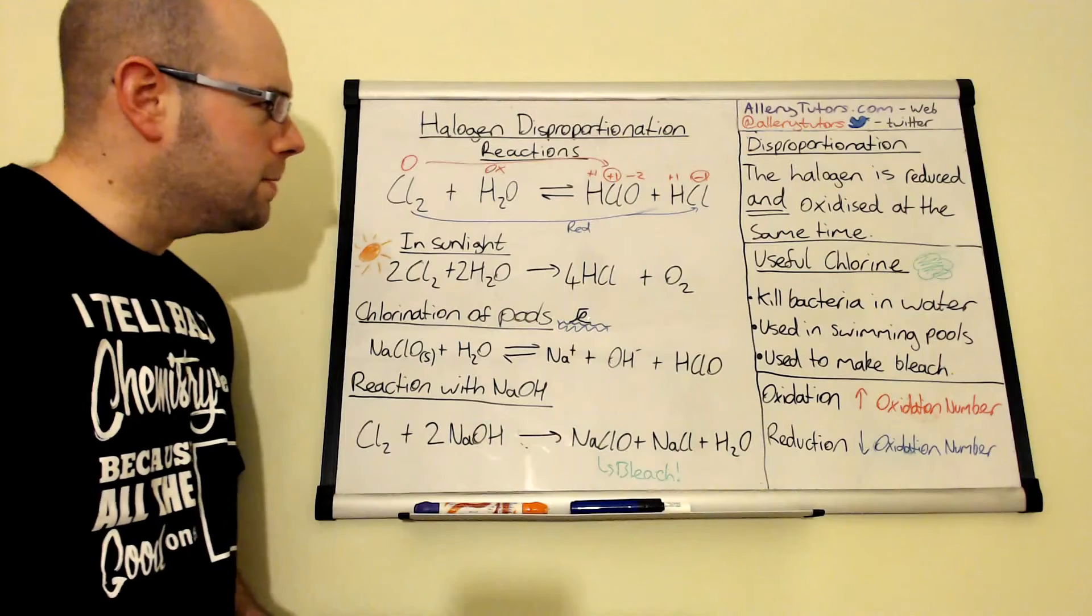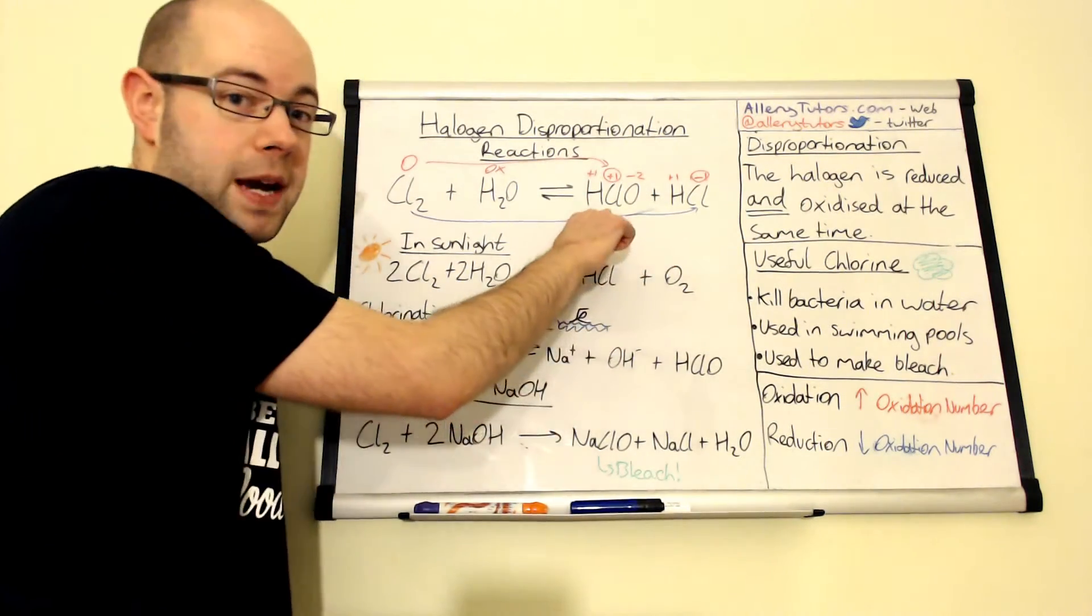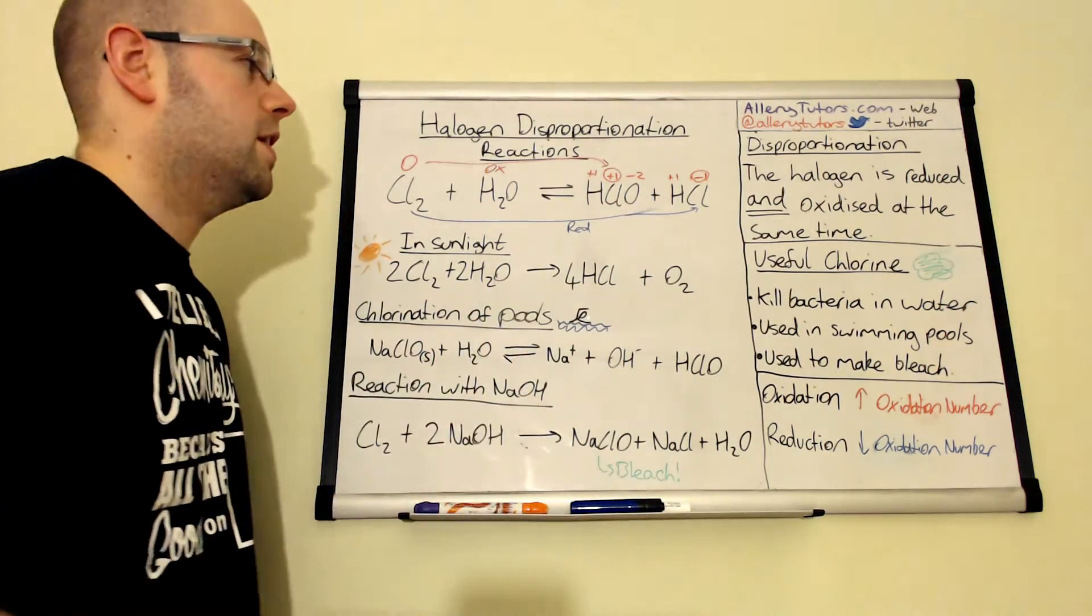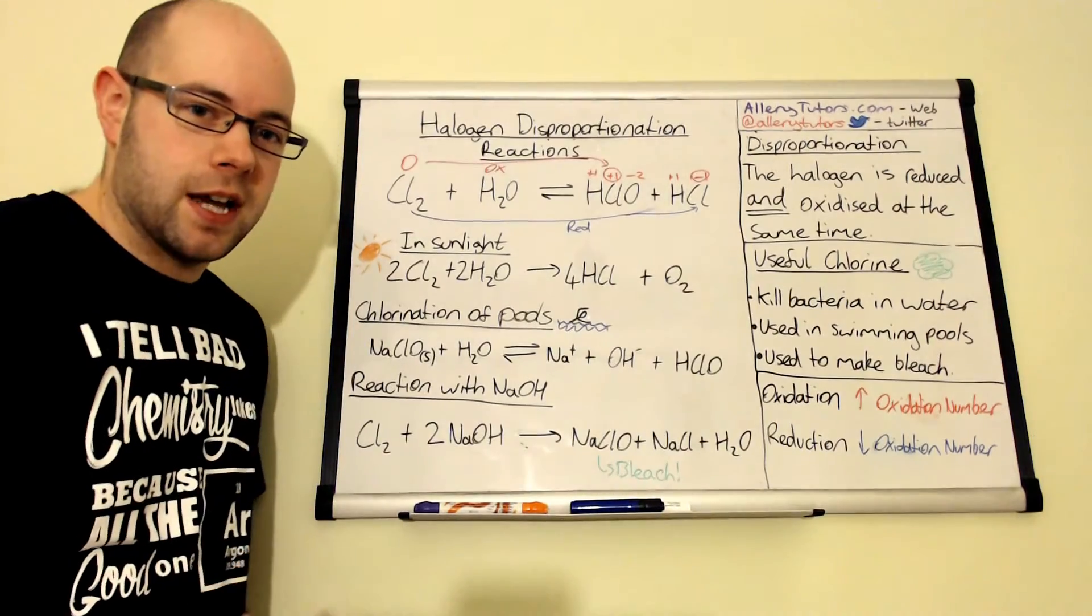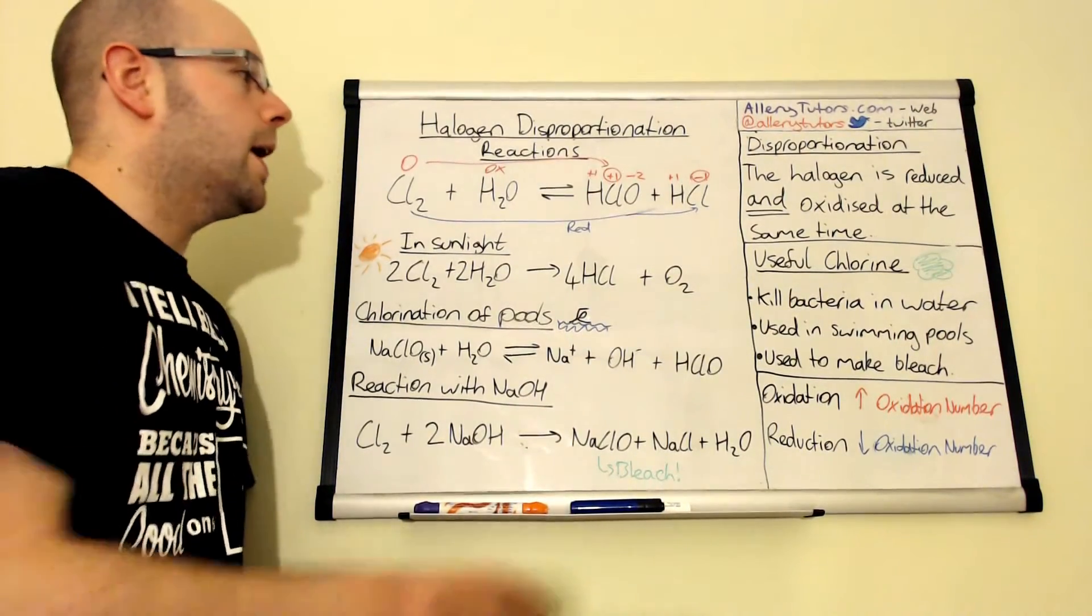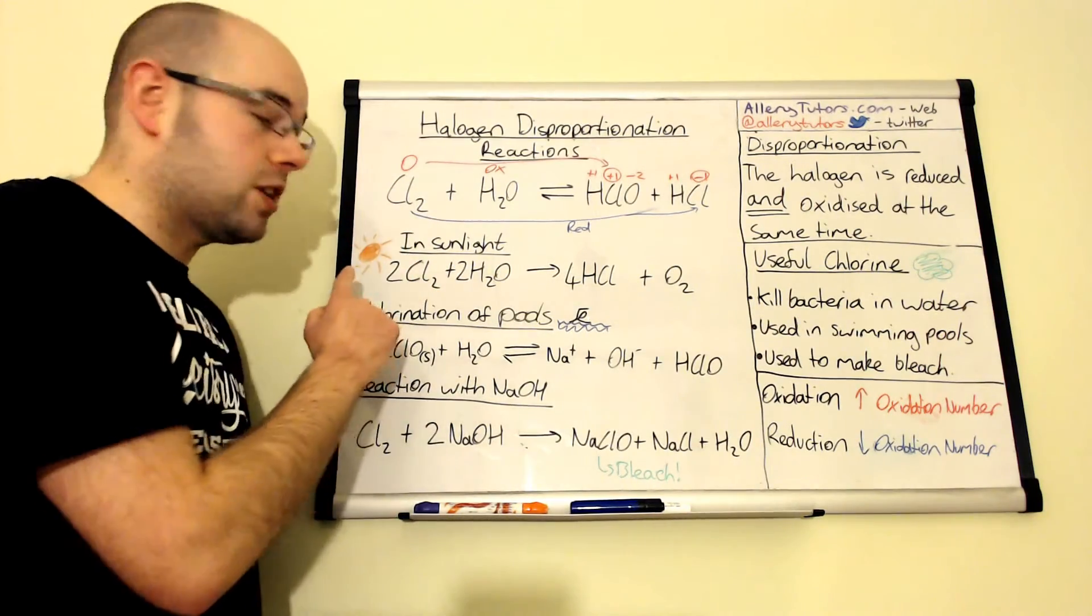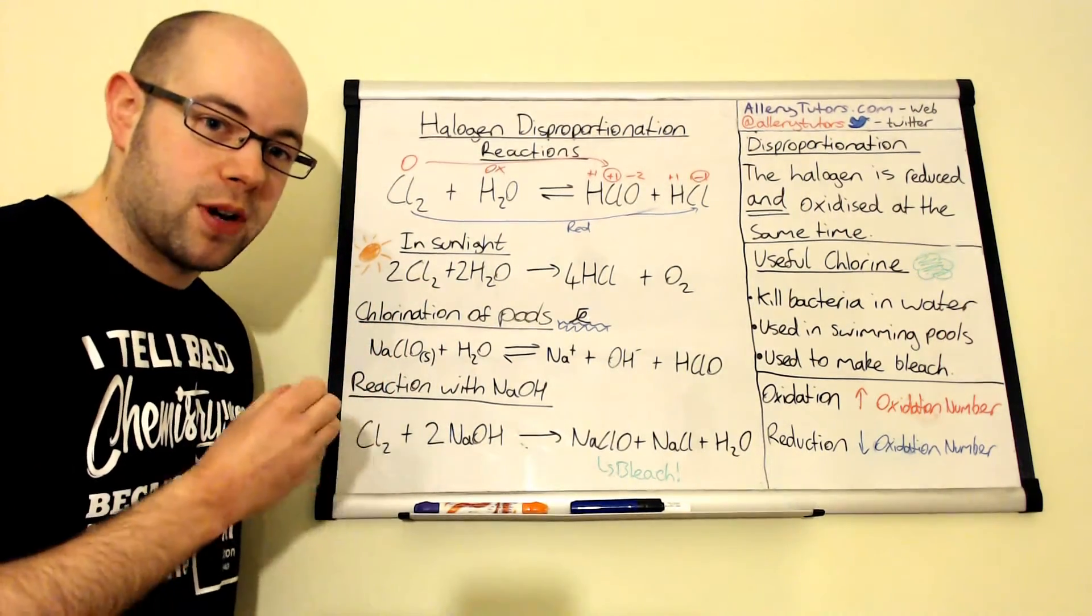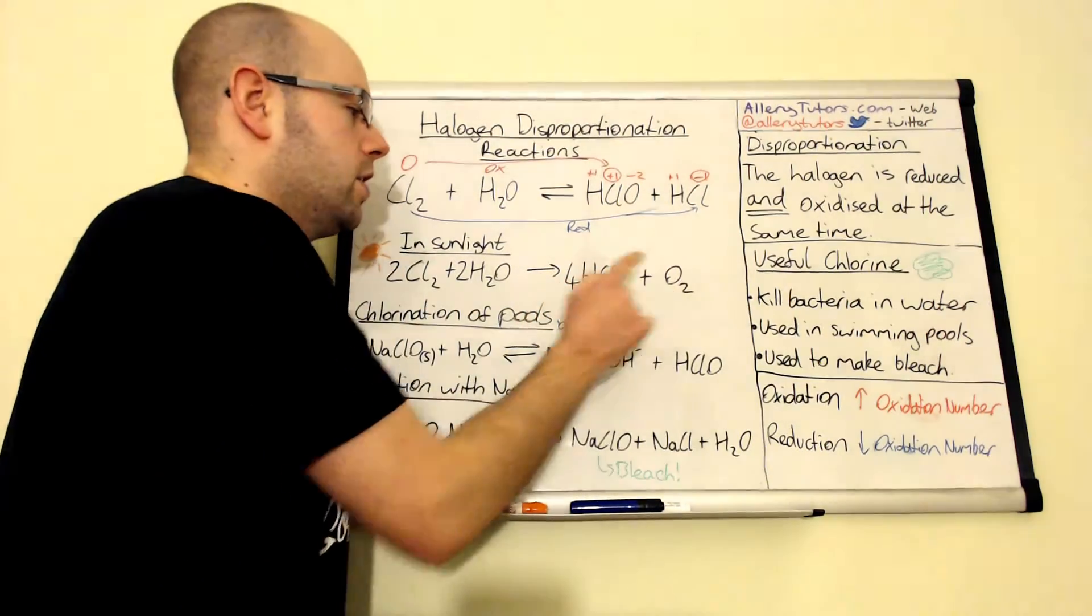Now the problem is that when this reaction occurs, this is the thing that actually kills the bacteria. This HClO is a very good oxidizing agent and that actually kills the bacteria in the pool. But the problem is that in the swimming pool itself, if you have sunlight, the sunlight will actually start to break down the chlorine in the water and form HCl and O2.